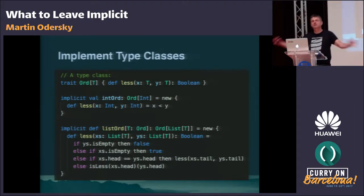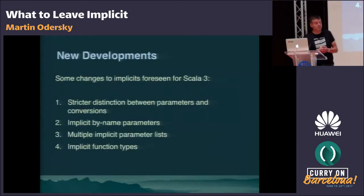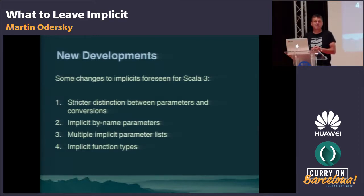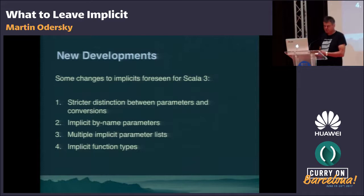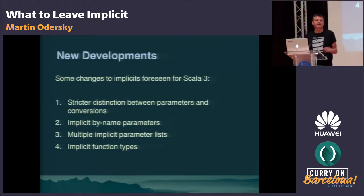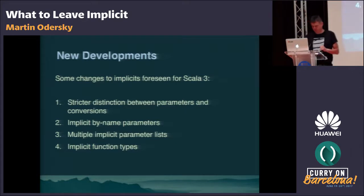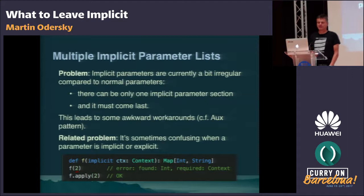Now let me get into some new developments, because Scala was not the first language with implicits — Haskell was first, but they were not very popular there. After Scala came out with implicits, there were quite a few other interesting implicit designs, notably Agda. Some changes foreseen for Scala 3 are: a stricter distinction between parameters and conversions; implicit by-name parameters; multiple implicit parameter lists; and implicit function types.